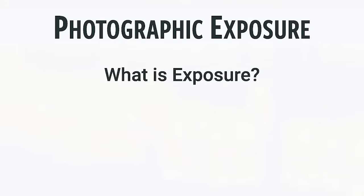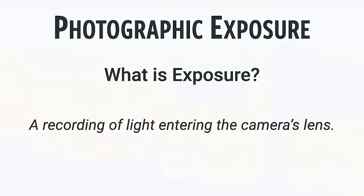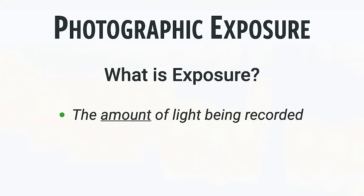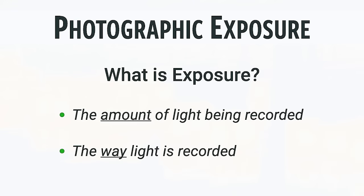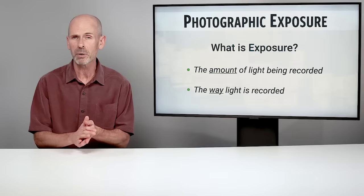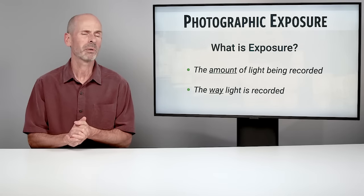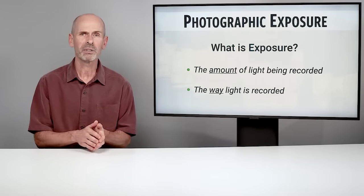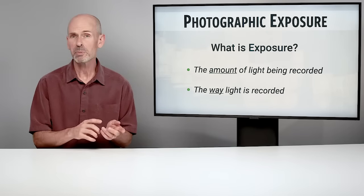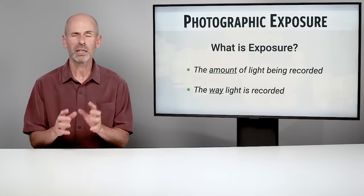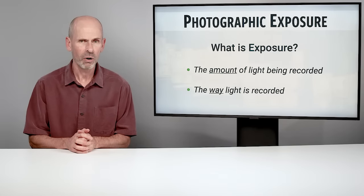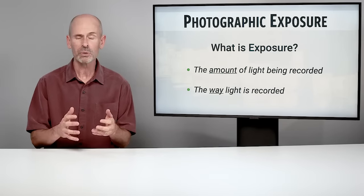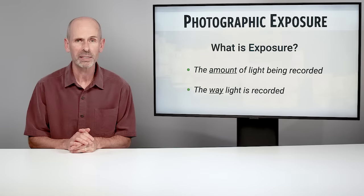So what do we mean by that? What is exposure? It's the light that's coming into your camera lens, but there's a lot going on in that little statement. We're talking about the amount of light coming in — overexposure, underexposure, proper exposure — but maybe much more importantly is the way light is recorded. Shutter speeds, apertures, and ISOs can have a huge impact on your images. It really helps you tell the story that you want to tell.